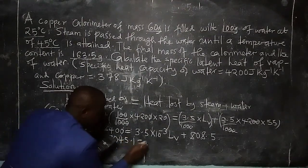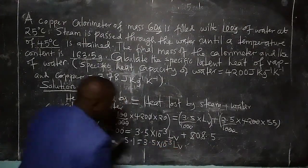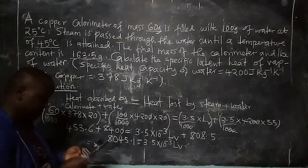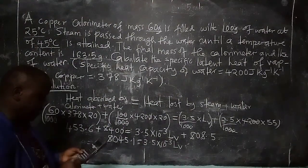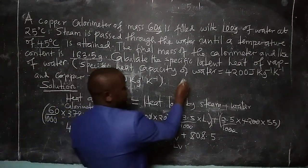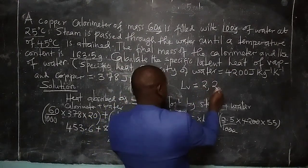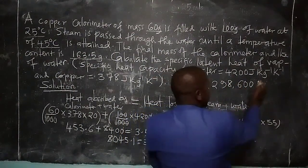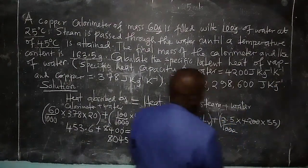Therefore 8045.1 equals 3.5 times 10 to the power negative 3 times latent heat of vaporization. We multiply by 1000 and then divide by 3.5, and this gives us a value of latent heat of vaporization of 2,298,600 joules per kilogram.